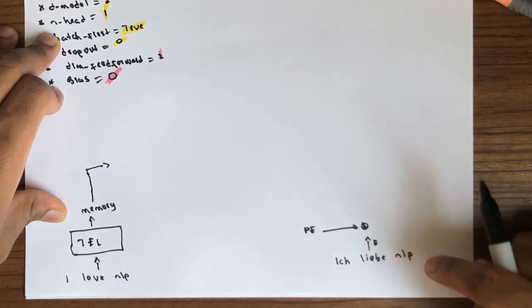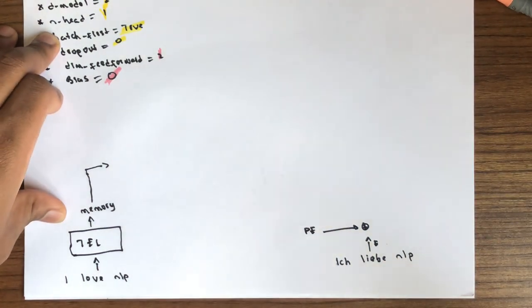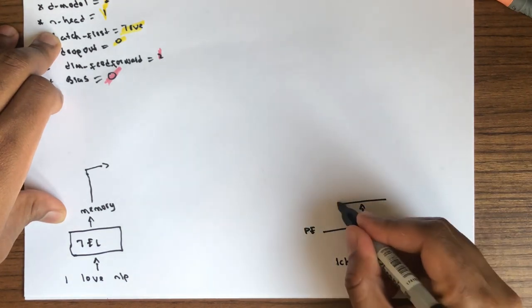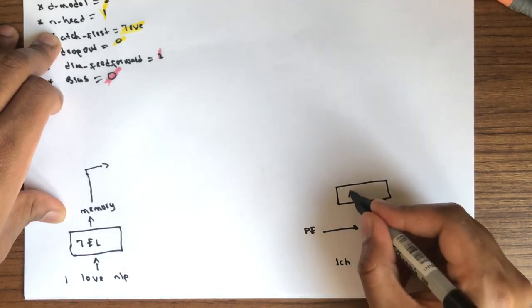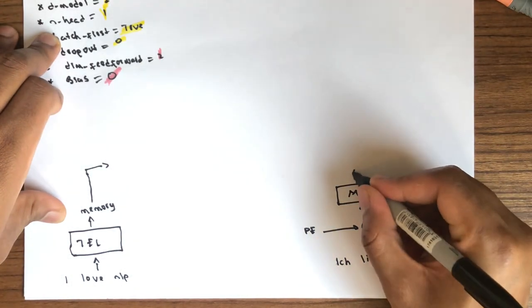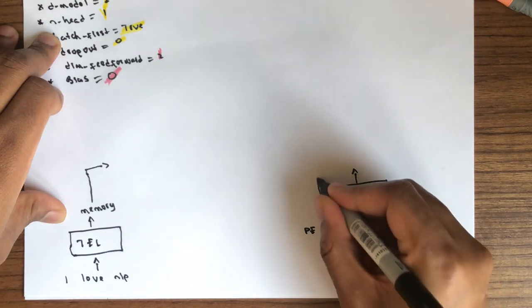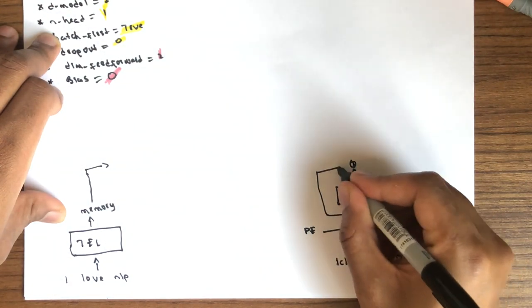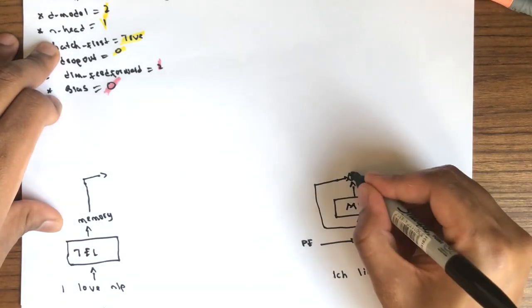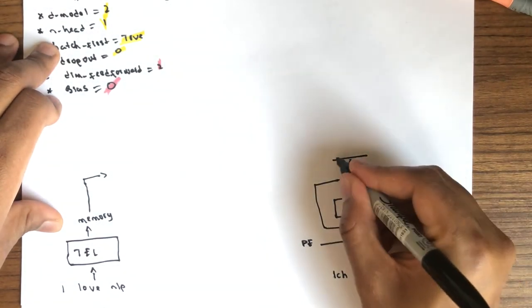And the output goes through multi-head attention. The output of the multi-head attention with the input of the multi-head attention are added. Okay, the output goes through a normalization layer.